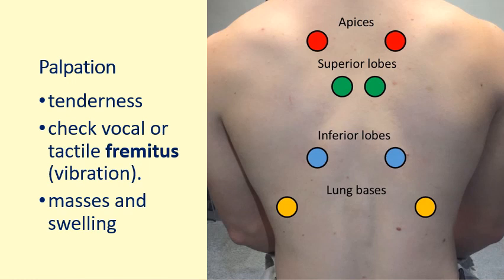During palpation, you check for tenderness, vocal or tactile fremitus — checking for vibrations when the patient says '99' — and masses or swelling. You need to palpate all areas of the lung fields, both anteriorly and posteriorly. Fremitus is felt during palpation and is referred to as tactile or vocal fremitus.